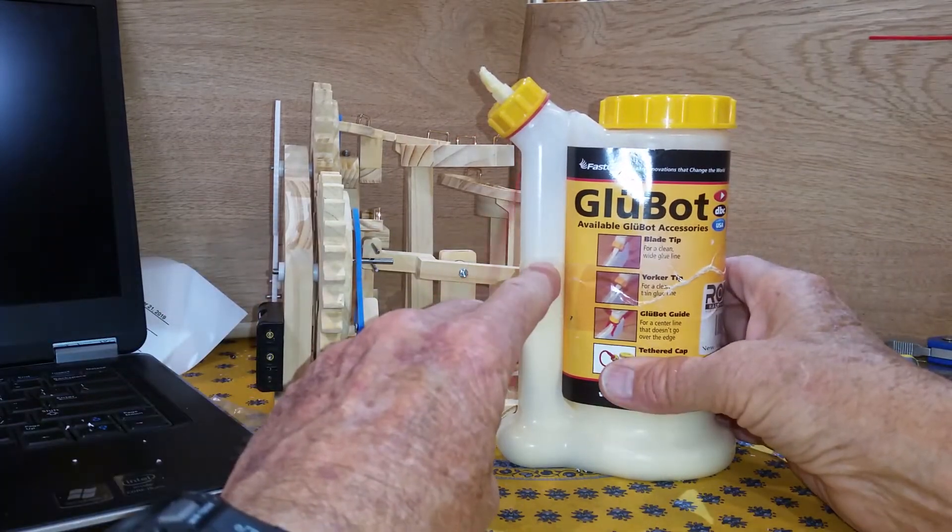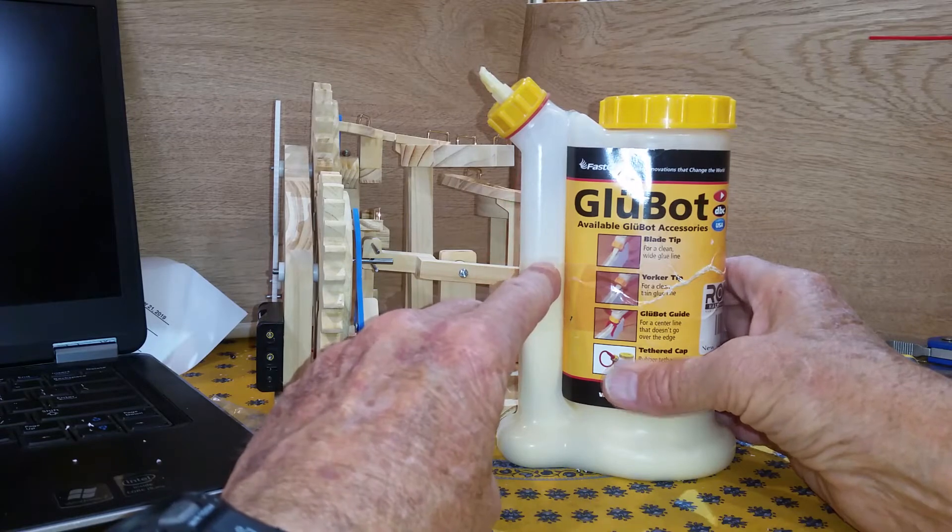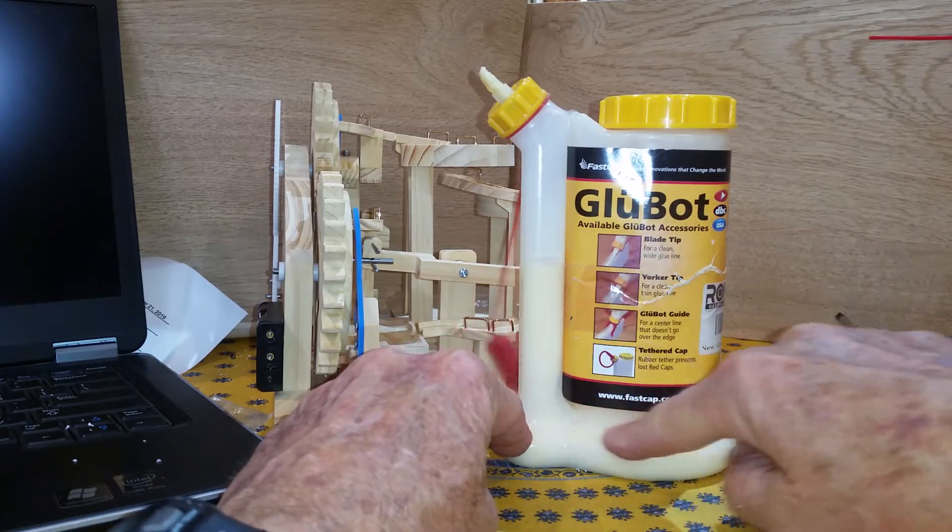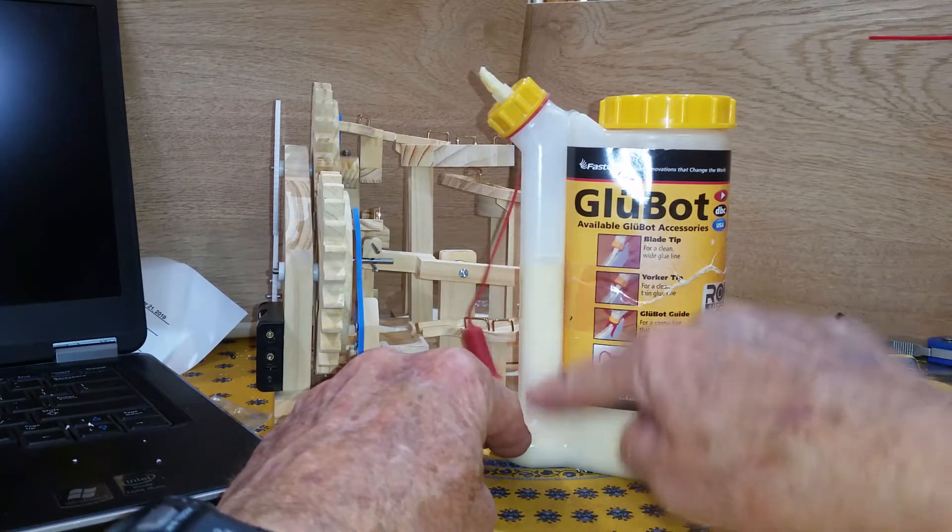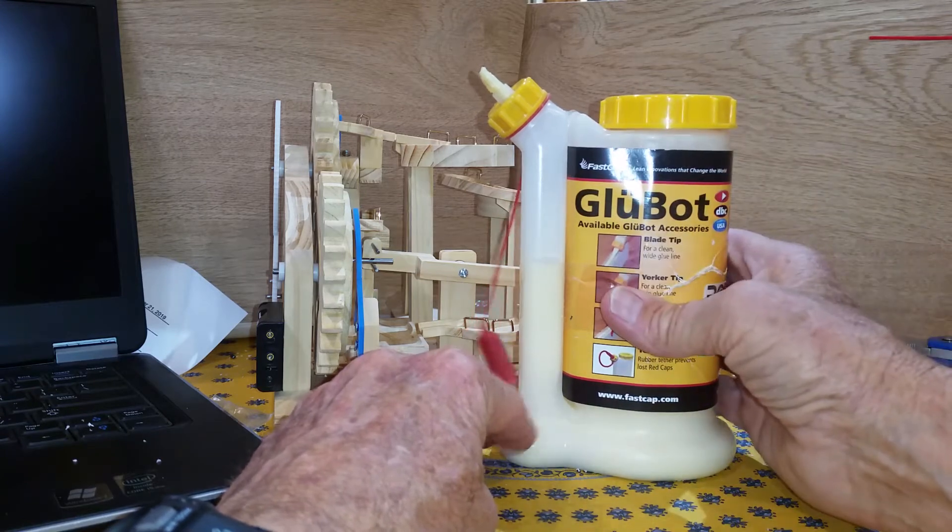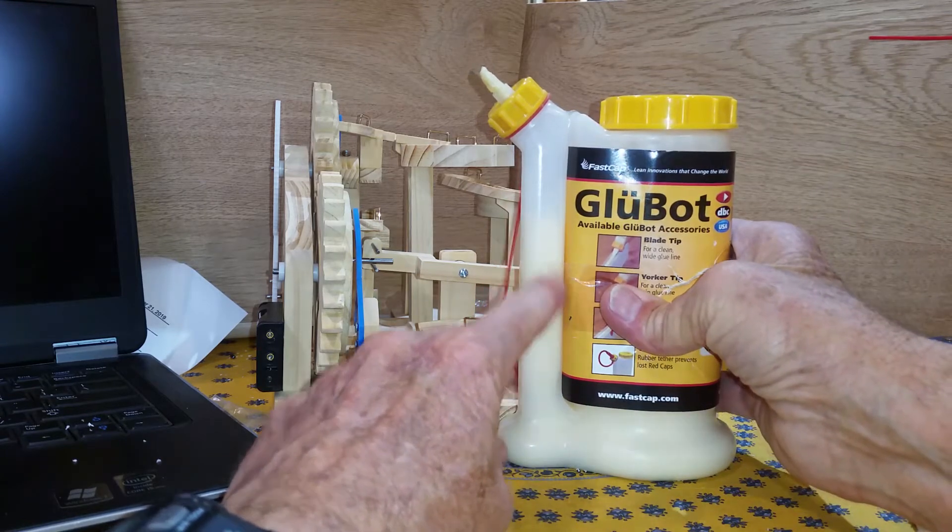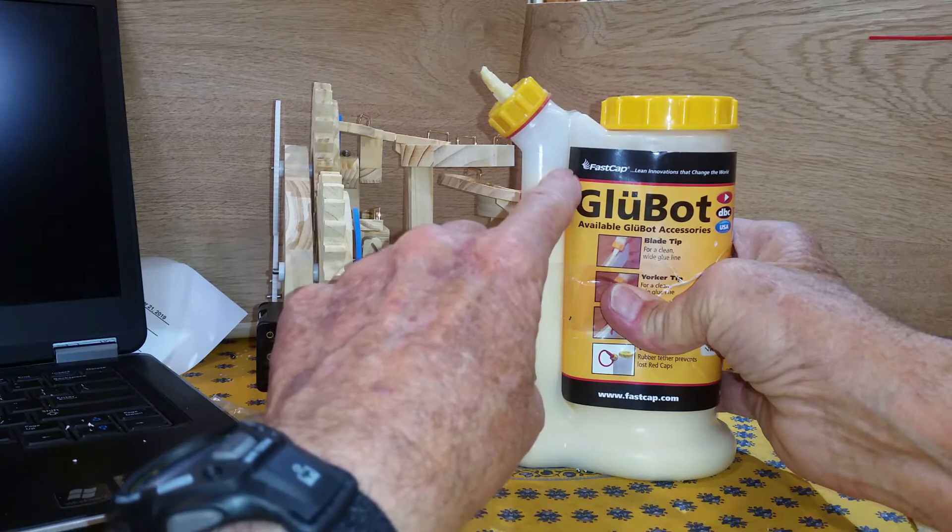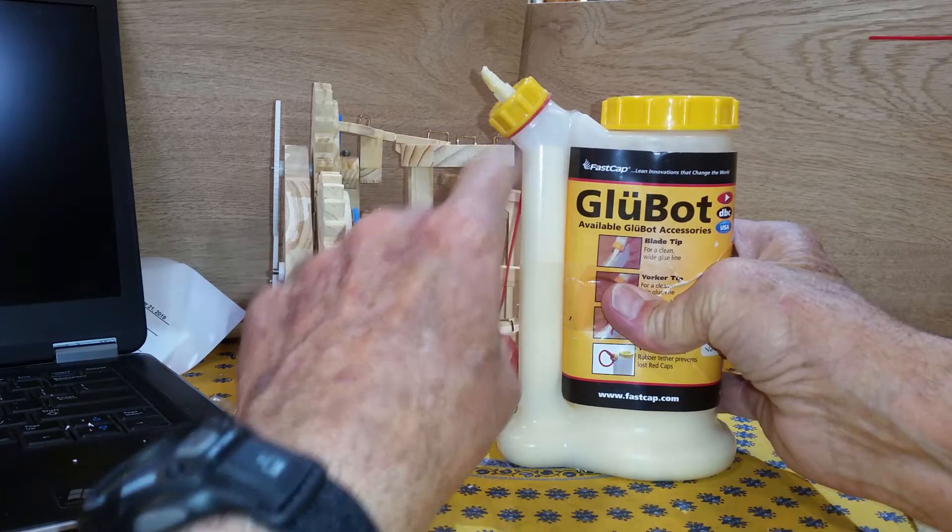You see here, this is the level of the glue right now. In the bottom here, there's an open channel that comes up to this vertical part. So when you squeeze it, the glue moves up into the applicator.